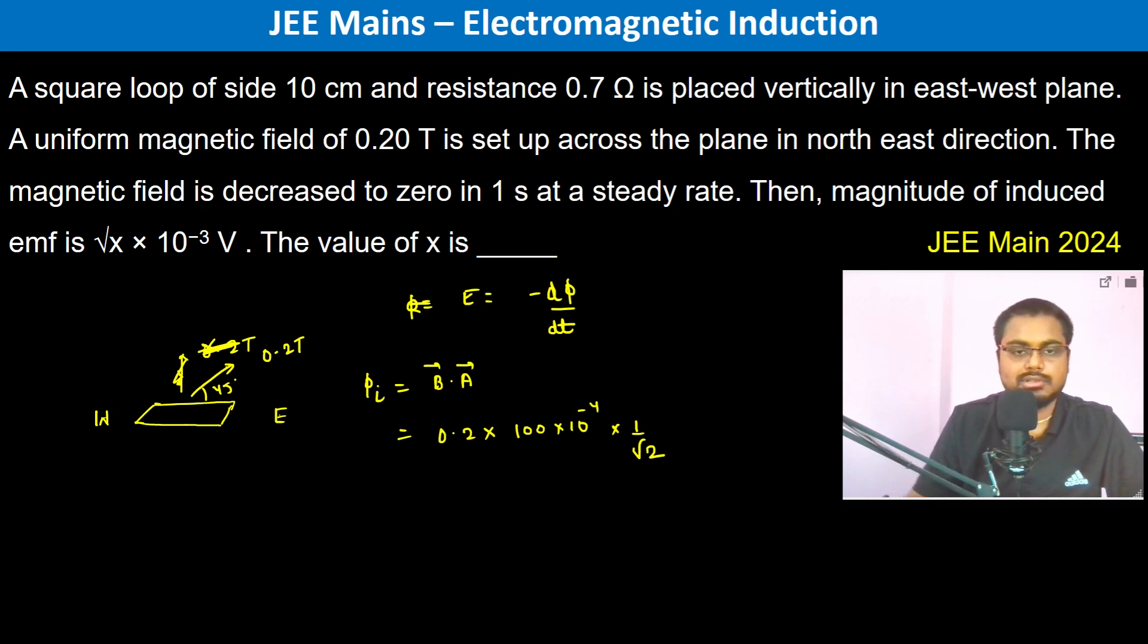So this is Phi initial. Now Phi final is going to be 0 because the magnetic field is decreased to 0. So therefore we have d(Phi)/dt which is EMF is going to be 0.2 into 100 into 10 to the power minus 4 into 1 by root 2 divided by 1 second.